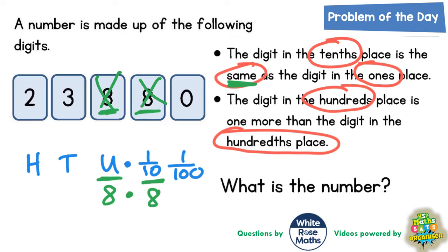Next up we've got the digit in the hundreds place, which is this one, is one more than the digit in the hundredths place, which is this one over here. Now we've only got a two, three and a zero left and the only two digits that are left where one is one more than the other is the three and the two.